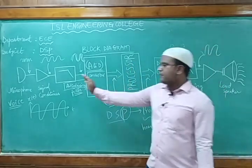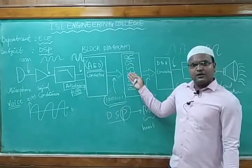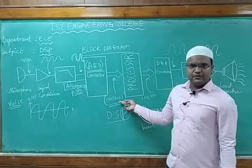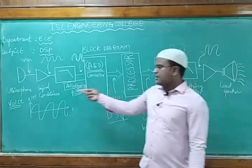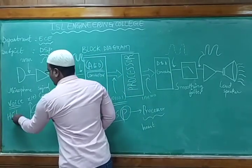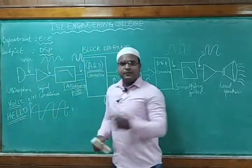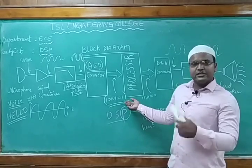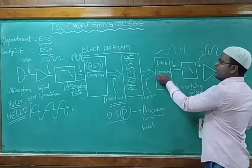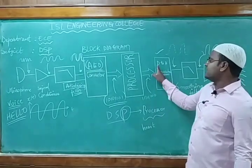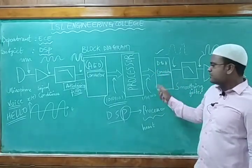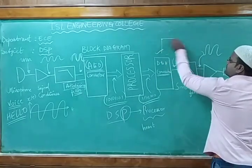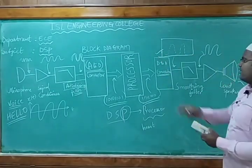Till now we have passed our signal to the processor. But from the processor we are not able to get our output directly — we cannot understand binary. We can understand the continuous signal. Suppose I give a signal like 'hello' — the other person should hear the same 'hello.' He cannot understand ones and zeros. So in order to do these things, we take a digital-to-analog converter, normally called a D-to-A converter. Whatever information is in binary form, it is converted into analog form by the D-to-A converter.